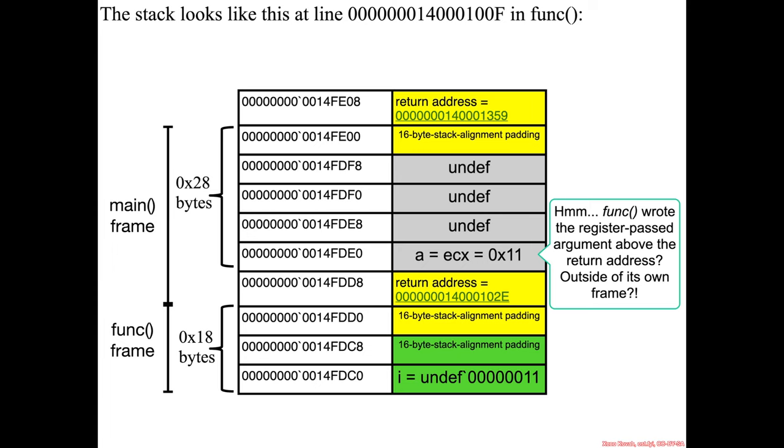By the point you get to assigning a to i, you should see a stack diagram that looks like this. You've got your typical return addresses, padding, the gray stuff that we don't really understand why it's there.